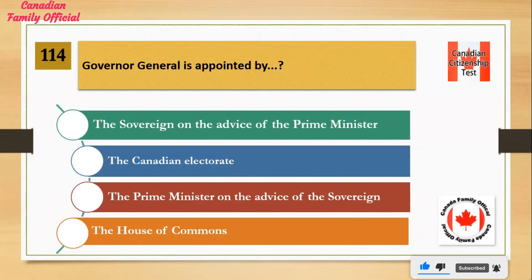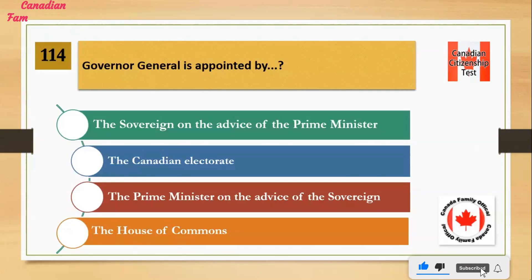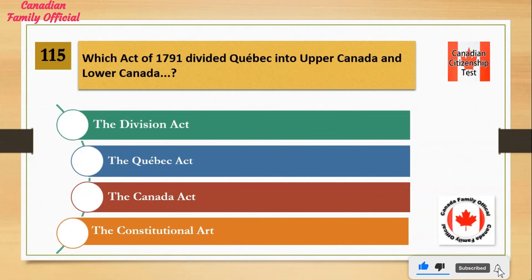The Governor General is appointed by: Number 1: the Sovereign on the advice of the Prime Minister. Number 2: the Canadian Electorate. Number 3: the Prime Minister on the advice of the Sovereign. Number 4: the House of Commons. And the answer is the Sovereign on the advice of the Prime Minister.